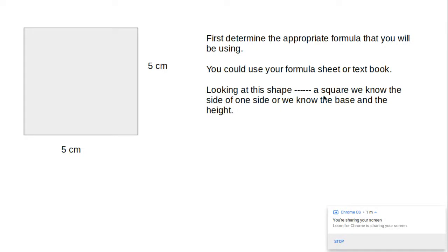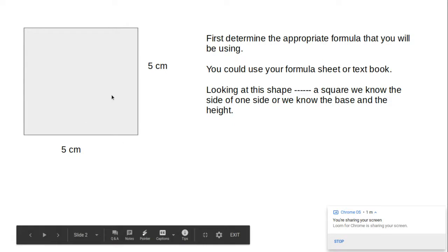Now looking at this shape, it is a square, and we know that one side, which means we know the base and the height, since it's identical all the way around.